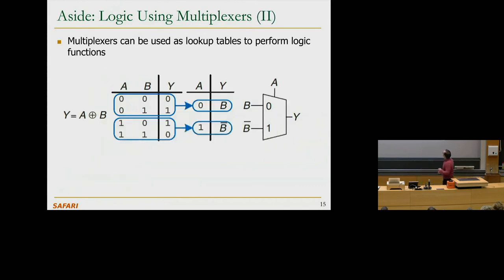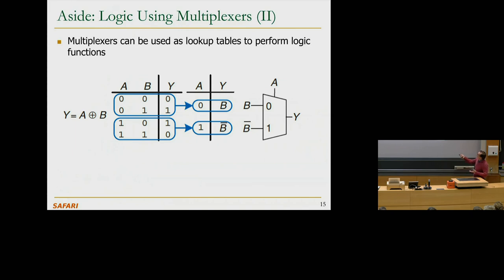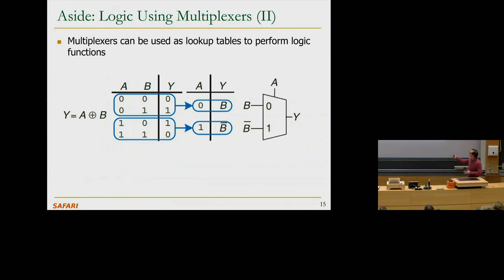You can implement even an XOR function using a multiplexer. XOR is A'B + AB'. If A is zero, the output should select B; if A is one, you should select B-bar. The function Y is XOR using a 2-to-1 multiplexer. In the end, it's Boolean logic — there may be many circuit implementations of the same Boolean function.